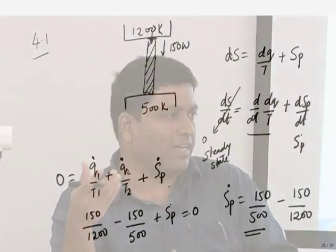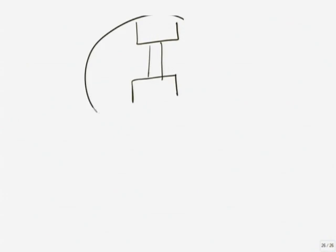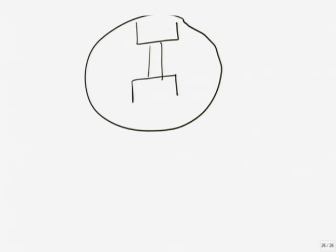This entropy is being produced — where is it going? Go back to the first argument about isolated systems. The moment you create an isolated system including the conductor and both reservoirs, there is no Q interaction, and delta S equals S_p-dot. The entropy of the combined system is really increasing. The entropy of the universe — meaning the isolated system of these three — is increasing; the state of the surrounding system is continuously changing.